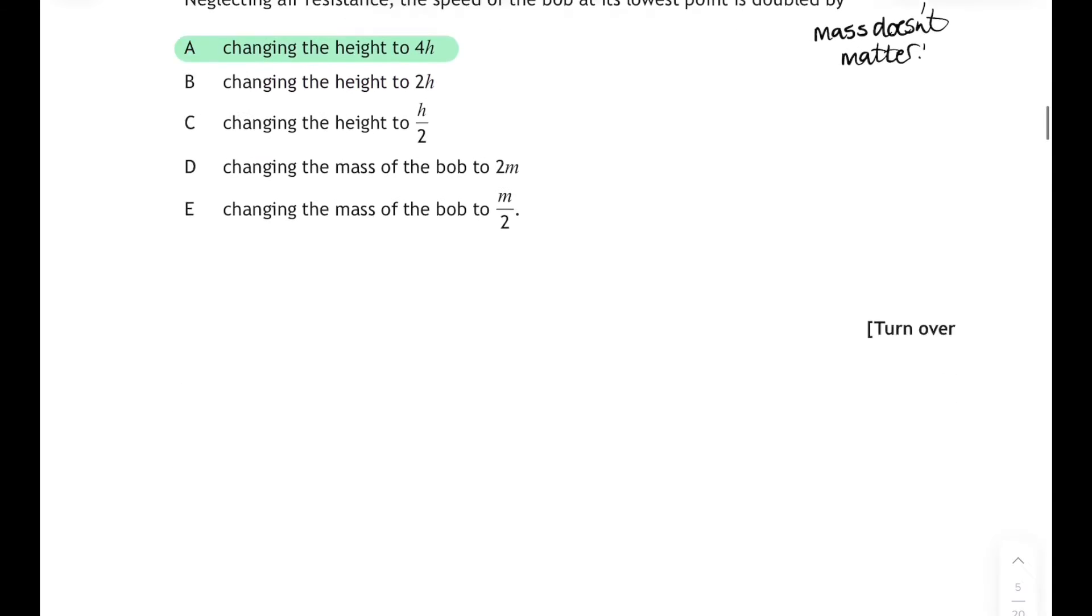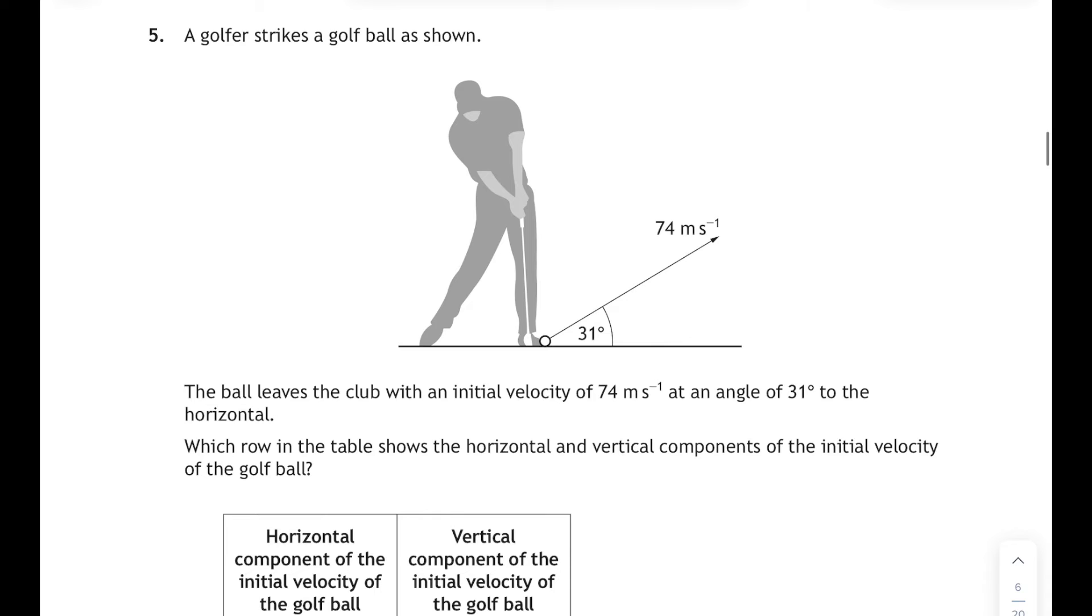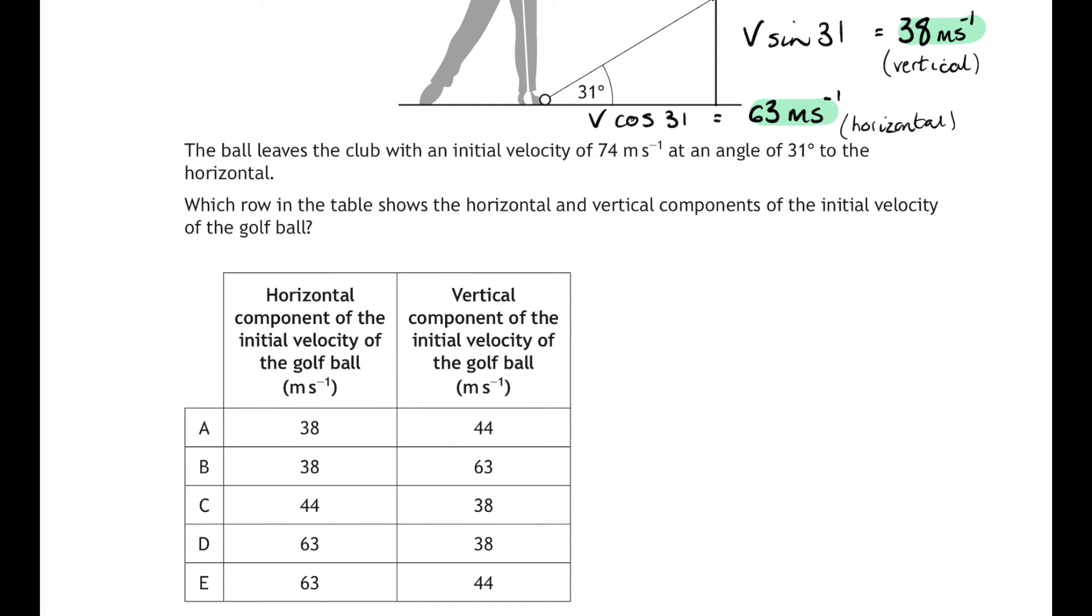Question five. A golfer strikes a ball as shown. Ball leaves the club with an initial velocity of 74 meters per second at 31 degrees to the horizontal. Which row on the table shows the horizontal and vertical components of the initial velocity of the ball? Well I'm going to complete my little right angle triangle there and the vertical side of that triangle will be v sine 31 and the horizontal side will be v cos 31. Cos for across, sine if you climb. And then if you work them out, v sine 31 is 74 times sine 31 is 38 meters per second, and 74 times cos 31 is equal to 63 meters per second. So let's have a little look at the table then and take care not to mix up your horizontal with your vertical. So the horizontal is 63, the vertical is 38, and that corresponds to answer D.